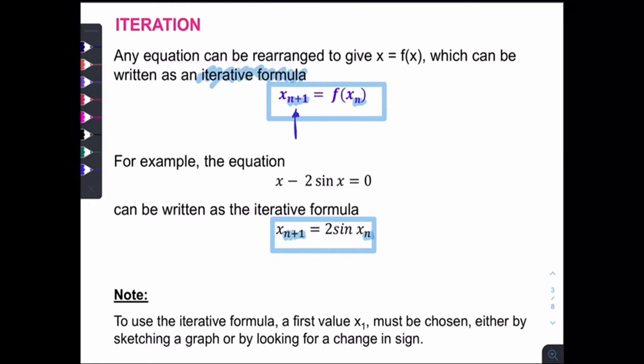And actually, there's another iterative formula for this equation. So let's say, now I arrange the two sine x at the left hand side and the x at the right hand side. We have to arrange it into this form where it can be only x at the left hand side. So what to do now is just throw away the two to the right hand side. So it becomes x over 2.